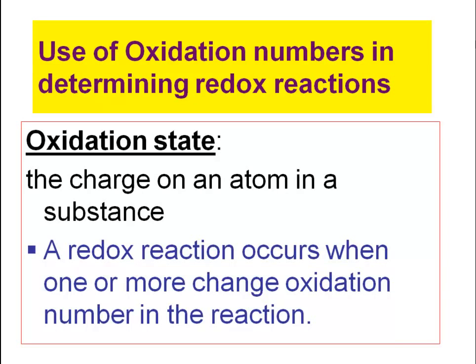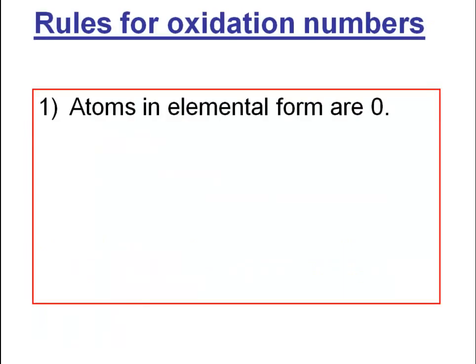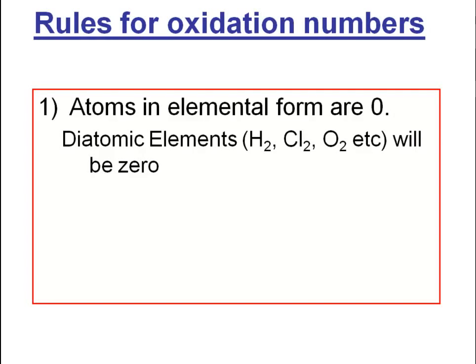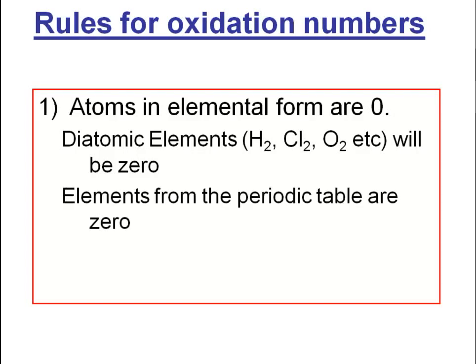When the substances in a reaction change oxidation numbers from reactant side to product side, you're dealing with an oxidation-reduction reaction. To determine oxidation numbers, there are a few rules to keep in mind. First, atoms in elemental form are zero. Diatomic elements — H₂, Cl₂, O₂ — will be zero because that's how they're found in elemental form. Carbon in its elemental form would be zero as well.